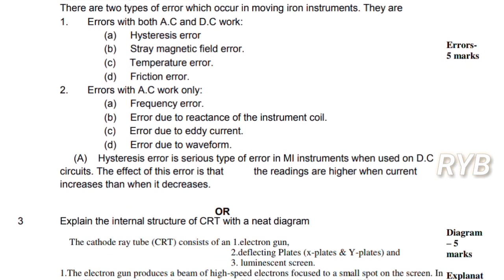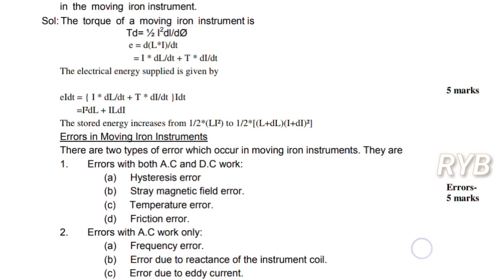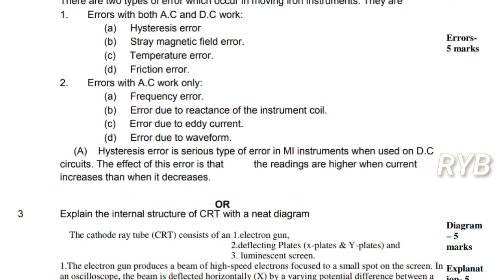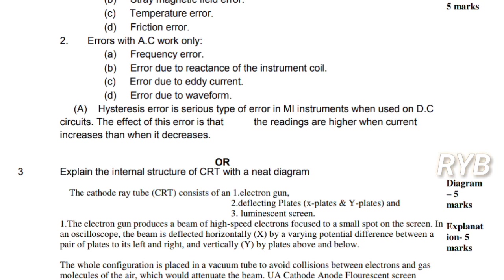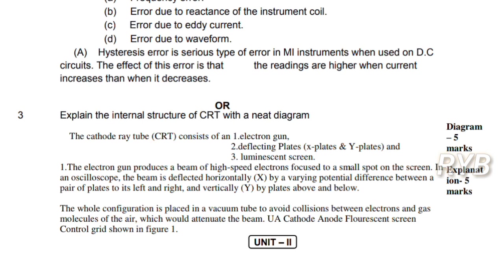The first question from Unit 1 covers the moving iron instrument torque equation. Another choice is to explain the internal structure of the CRT. The CRT — cathode ray tube — is the internal part of the CRO. Draw the diagram of main parts of CRT and you will get five marks. The electron gun produces a beam of high-speed electrons. The heart of the CRO is the CRT; electrons liberated from the cathode in the electron gun are transferred to the fluorescent screen through the deflection plates.